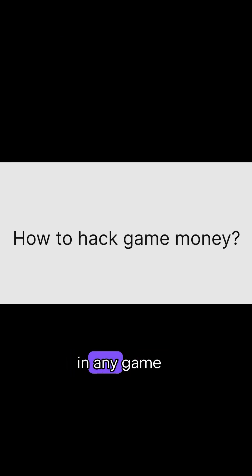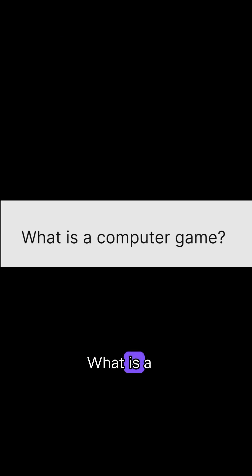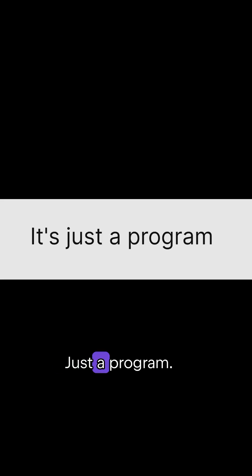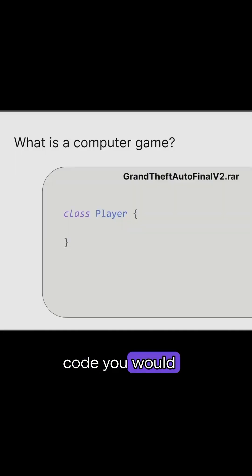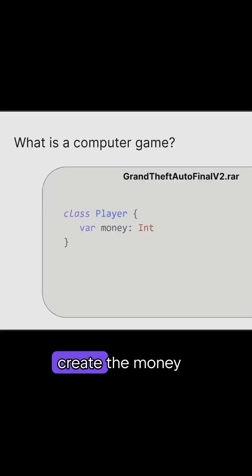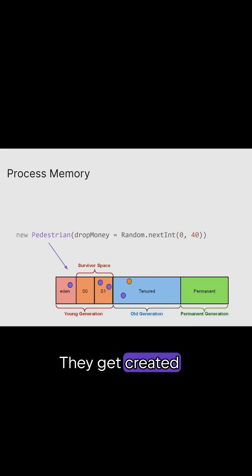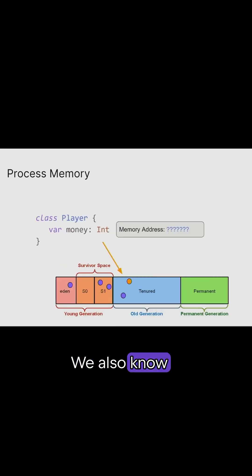The very first thing that people want to hack in any game is money. What is a computer game? Actually just a program. Then there's source code. In the source code, you would probably create the player class for it, right? And if you want your player to have money, you would probably create the money variable for it. What actually happens when you create these classes? They get created and put somewhere in memory.